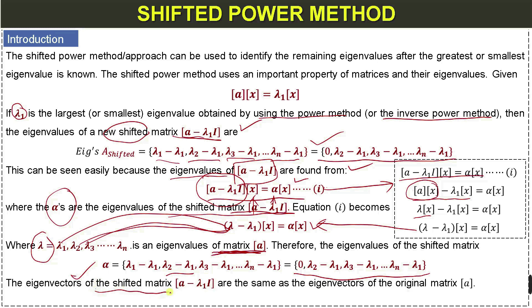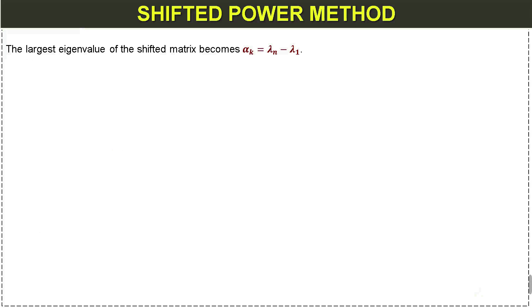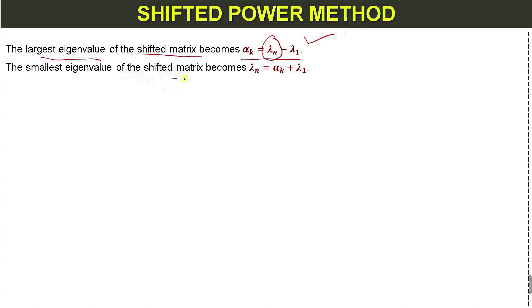The eigenvectors of the shifted matrix are the same as the eigenvectors of the original matrix A. For the largest eigenvalue of the shifted matrix: a_k equals lambda_n minus lambda_1. For the smallest eigenvalue of the shifted matrix: it equals a_k plus lambda_1. This equation applies for the smallest eigenvalue and the other for the largest eigenvalue using the shifted power method.